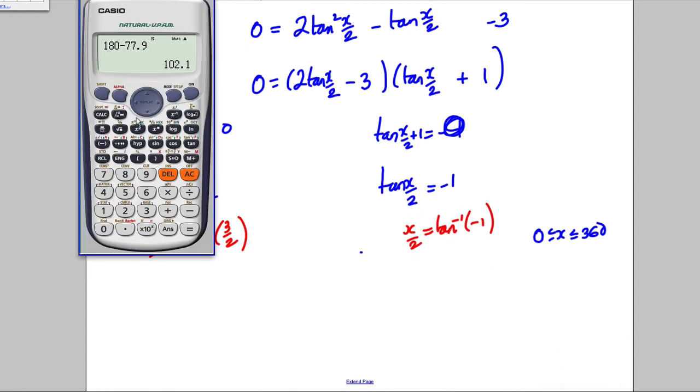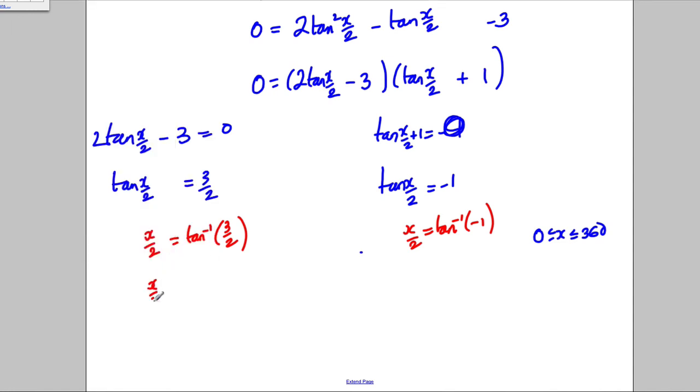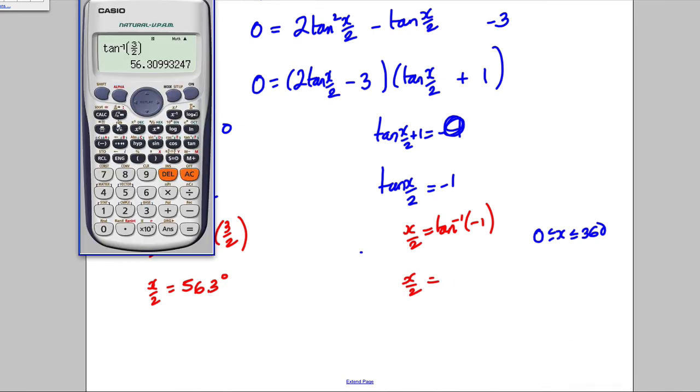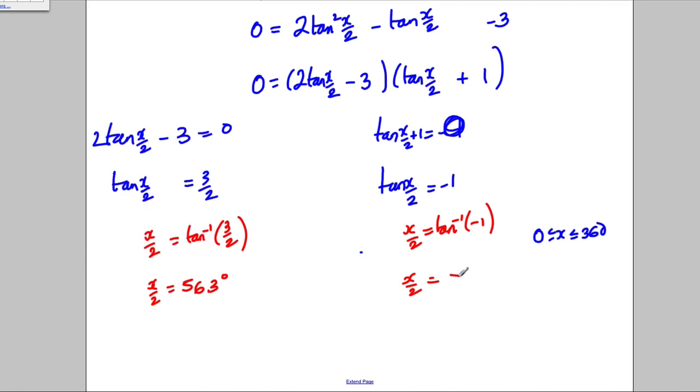Calculator out. Put it in degrees mode. Inverse tan of 3 over 2. And I would get 53.6. So X over 2 is 56.3, 6.3 degrees. And X over 2 here would be inverse tan, negative 1, close brackets. And I get negative 45.